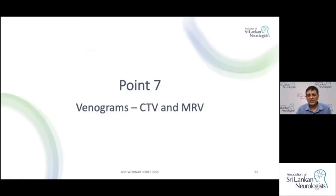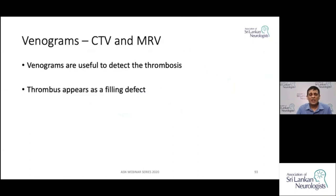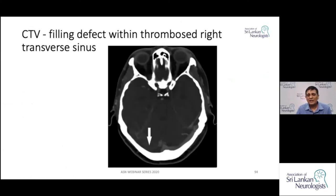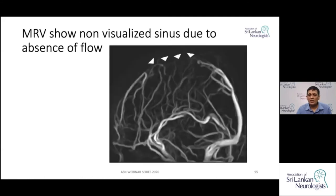The next modality is venograms — you can do CT venograms or MRI venograms. Venograms are useful to detect thrombosis because the thrombus appears as a filling defect. On CT venogram, you can see a flowing transverse sinus on one side but an absent sinus on the other where the thrombus creates a filling defect. On MRV, a thrombosed area in the sagittal sinus shows absence of flow and the sinus segment is not visualized.